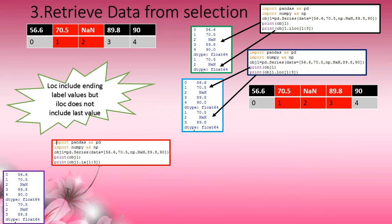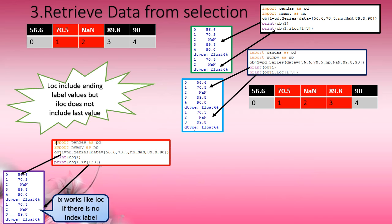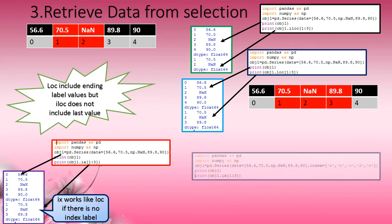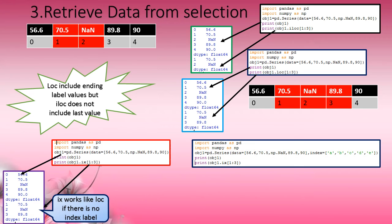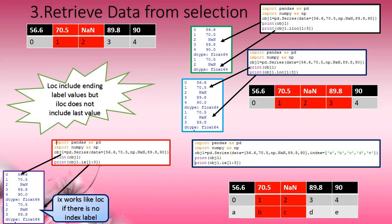For IX with 1:3 and no index label given, values from positions 1 to 3 are retrieved and displayed. When a custom label is given and IX[1:3] is used, it retrieves only positions 1 to 2 — so if a label is given, IX works like ILOC and does not include the last value.